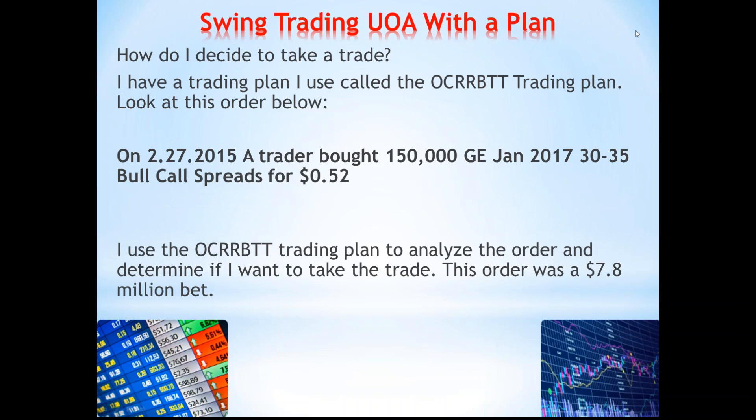On February 27th, a trader bought 150,000 GE January 2017 30/35 bull call spreads for 52 cents — a $7.8 million bet. I immediately know this is institutional order flow because most retail traders don't have $8 million to bet in the derivatives market on GE. I use the OAK RIBBIT trading plan to analyze the order: determine if it was an opening or closing position, whether it's a hedge or speculative bet, the risk/reward and breakeven, and my time and target period. If I like how all of those things set up, I'll take the trade.